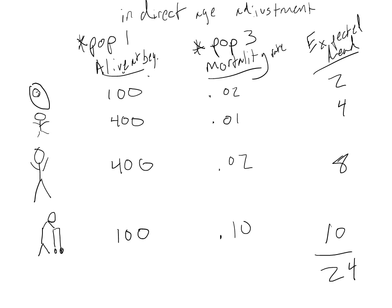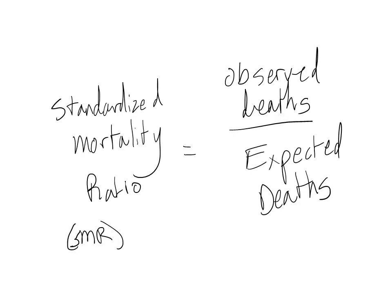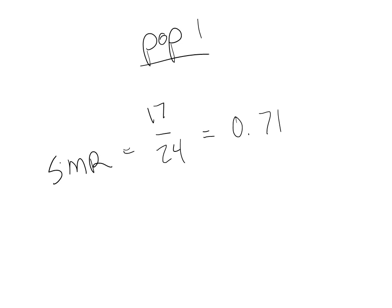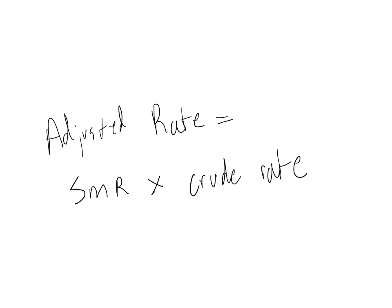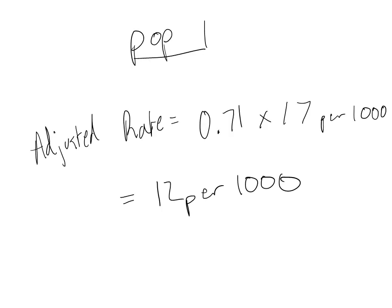This slide shows the calculations for population 1. We use the standard population's mortality rates and population 1's age distribution to estimate the expected number of dead individuals for each age group. We then calculate something called the standardized mortality ratio, or SMR. The SMR is the ratio of the number of observed deaths in our population to the number of expected deaths based on the standard population's mortality rate. For population 1, the SMR was 0.71. Our adjusted rate is then the crude mortality rate times the standardized mortality ratio, giving an adjusted rate of 12 per 1,000.